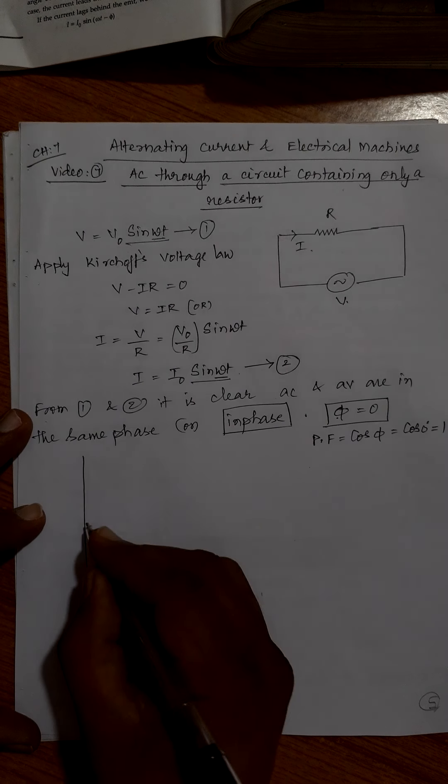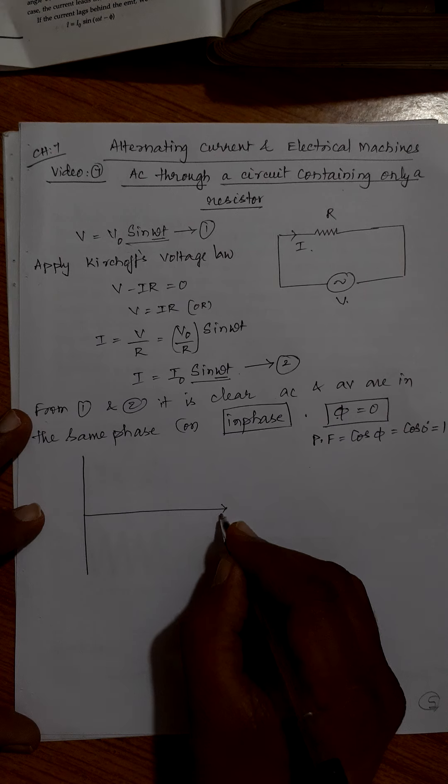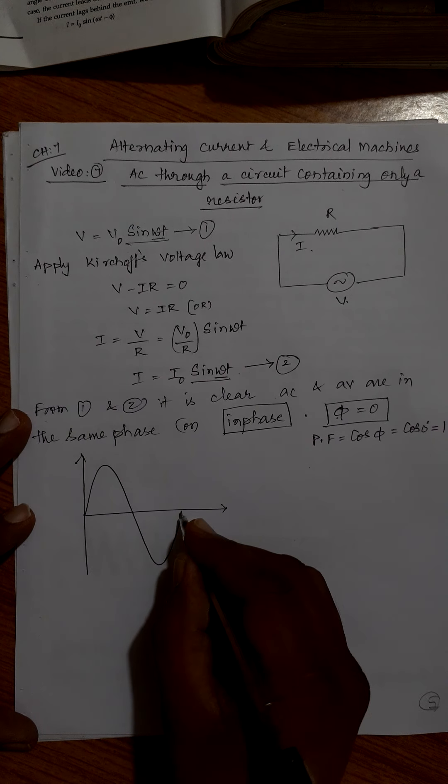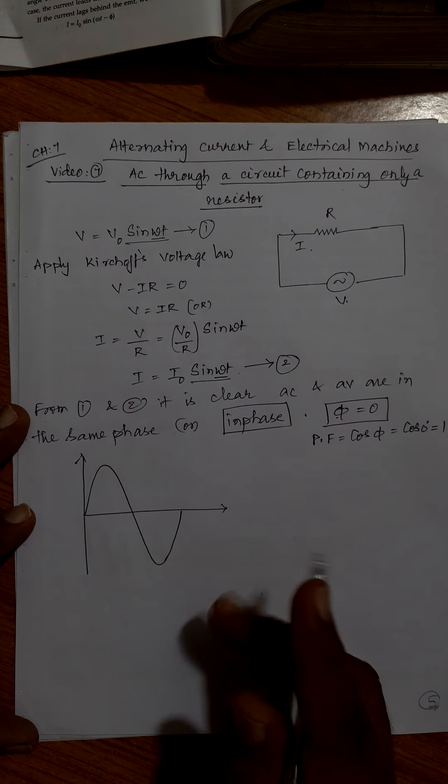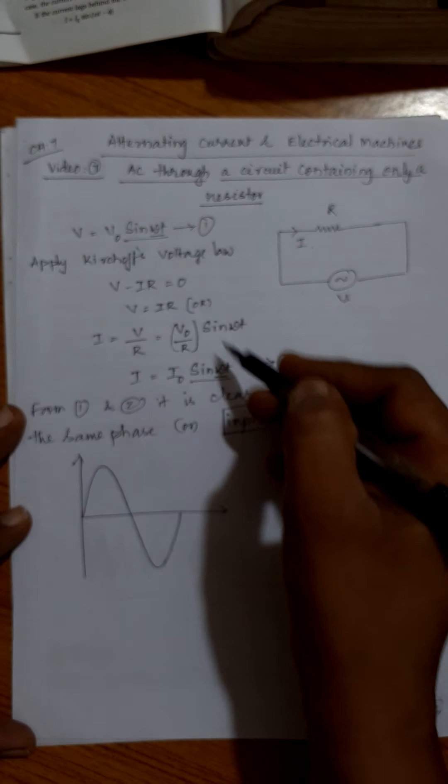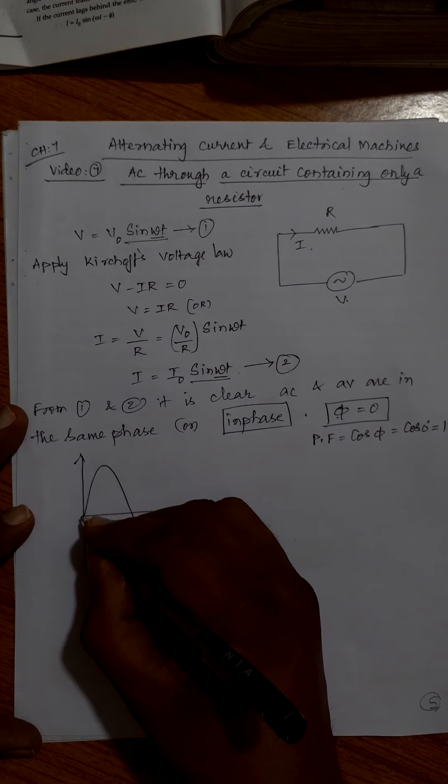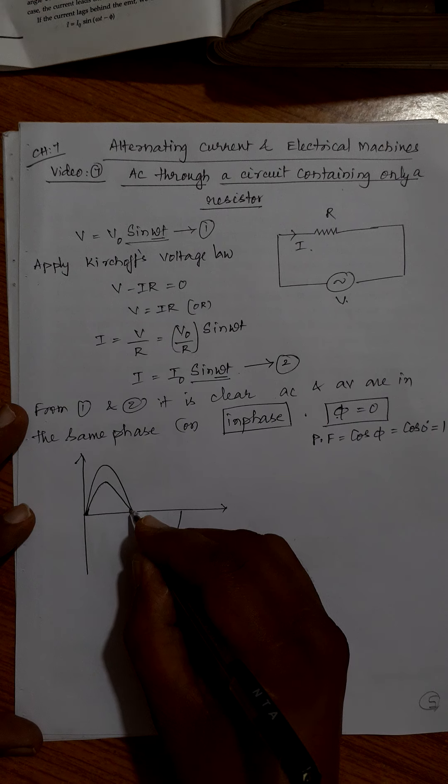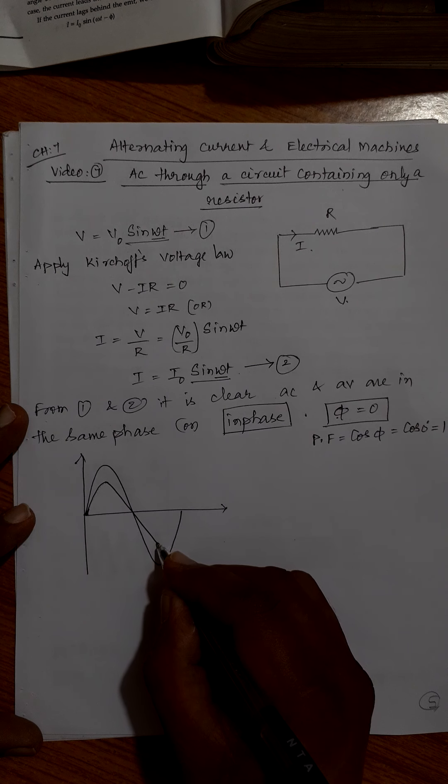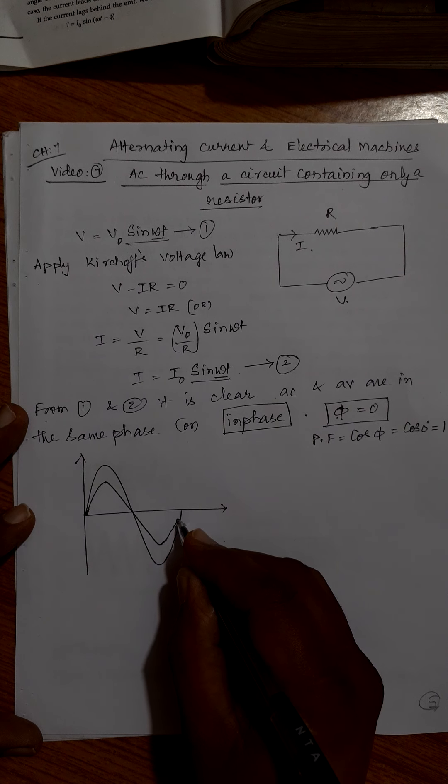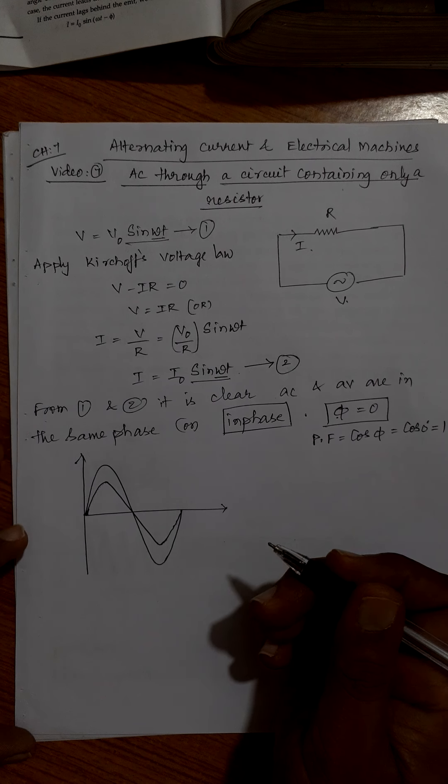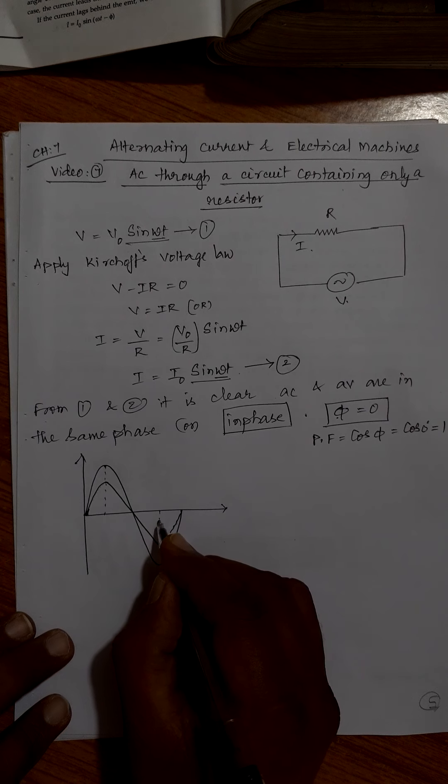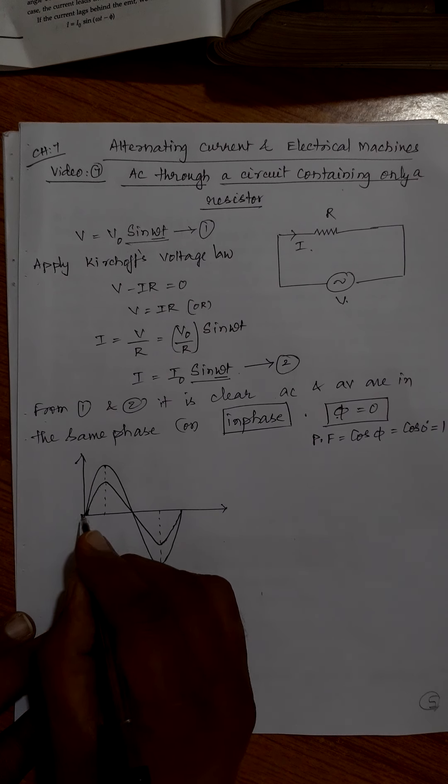So as it is clear that voltage and current are in the same phase, how to draw the waveform. Representation of voltage and current in terms of waveform. Voltage you represent like this. Because both are sine functions and there is no phase difference between them. That means they both start simultaneously, reach maximum simultaneously, come to mean position simultaneously.